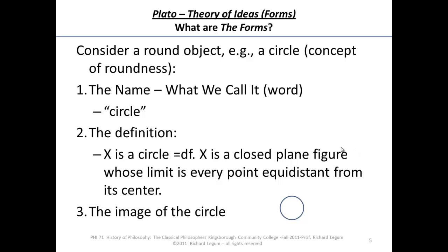But have we gotten to roundness yet? Roundness isn't the name, or circle isn't the name. It's not the definition, and it's not the image. When you're thinking about a circle, I'm thinking about a circle. It's not the image. It's not the definition. It's not the fact that we call the thing circle.